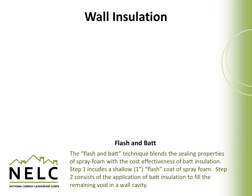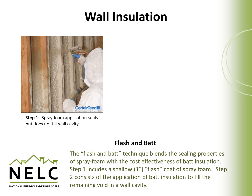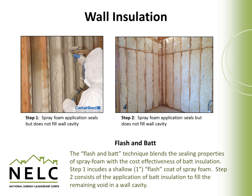A newer technique combines the advantages of spray foam with the affordability of batt insulation — this two-step method is called flash and batt. In the first step, a flash coat of foam is applied which seals up the wall cavity but doesn't completely fill it, still leaving room for batt insulation on top. This method allows the spray foam to fill gaps and seal the wall, while the affordability of batt insulation combined with it can produce a highly insulated wall at an affordable cost.